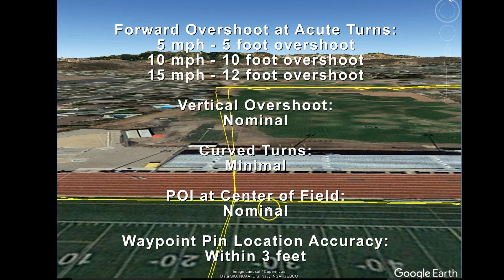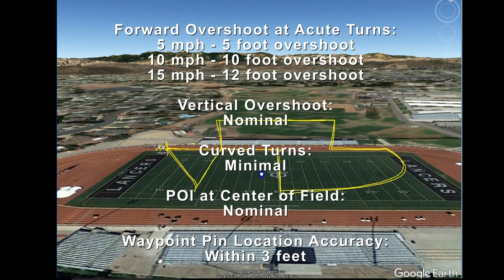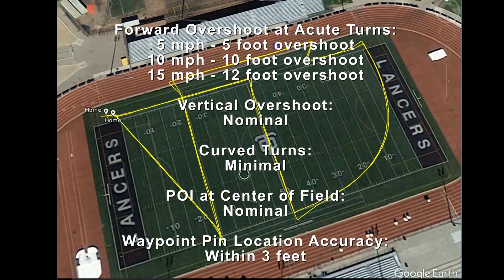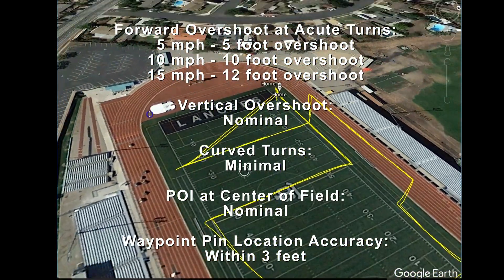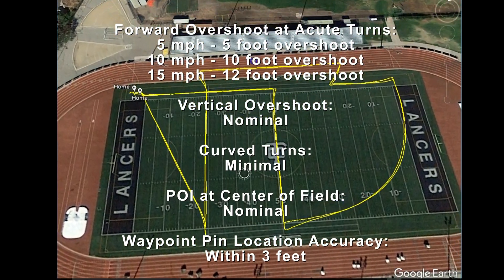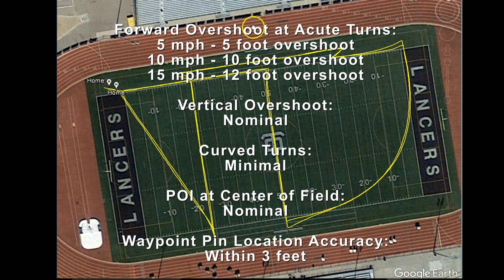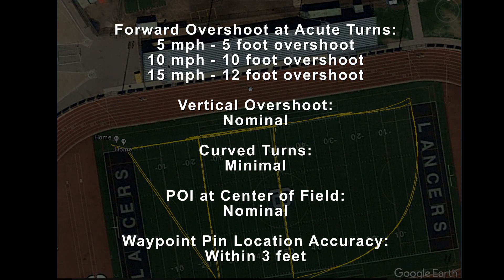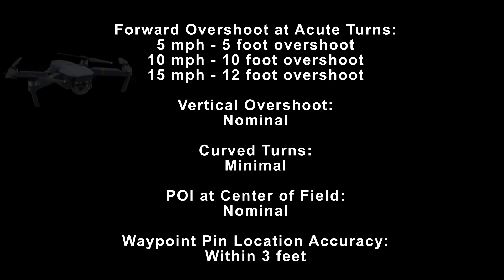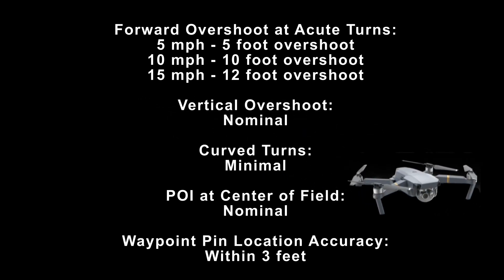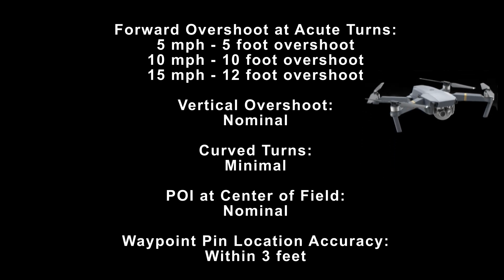In summary, allow about a five foot overshoot when flying at five miles per hour, 10 feet at 10 miles per hour, and 12 feet at 15 miles per hour. Vertical overshoot is very nominal. Curved turns show very minimal deviation between the five and 15 miles per hour runs. I also ran a point of interest test with it located in the middle of the field and found very nominal deviation. For waypoint pin location relative to actual flight path, allow about a three foot deviation. Hopefully you found this video helpful — please like and subscribe. Happy flying!